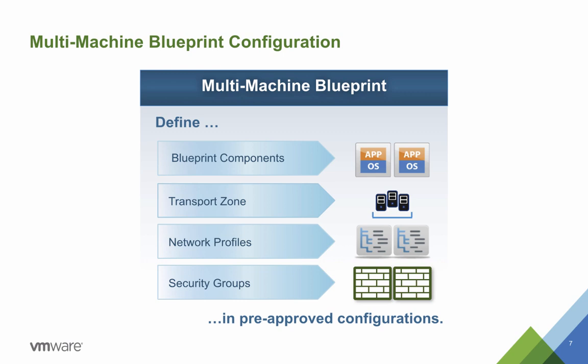Having defined your network profiles and reservations, the final step is to configure your multi-machine blueprint. You will need to identify one or more single machine blueprints to include as components. Secondly, select the appropriate transport zone information as provided by your NSX administrator. Thirdly, select the network profiles which you wish to use with your blueprint components. Finally, identify any NSX security groups which you wish your blueprint VMs to inherit security policies from. Once this is done, you are ready to publish your application blueprint and allow users to request it from the service catalog.